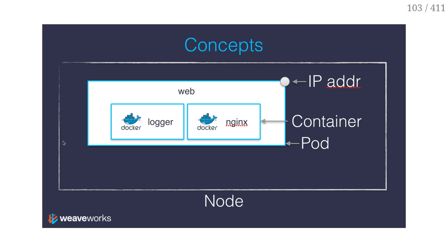There is one resource that deserves that we spend some time on because it's not completely intuitive, but it's very important. It's a pod. A pod is a collection of containers that form an atomic unit of scheduling. What does that mean, like an atomic unit of scheduling? It means it's a group of containers that always get scheduled together.